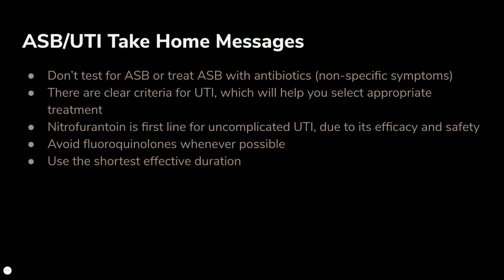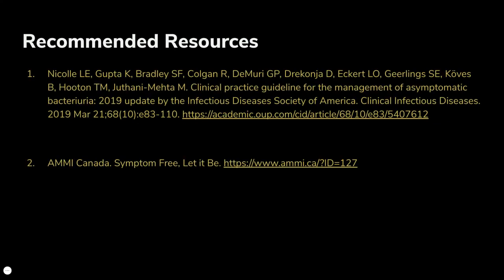Take-home messages: Don't test for or treat asymptomatic bacteriuria with antibiotics in older patients. There are clear criteria for urinary tract infection, including the Loeb criteria, which will help you select appropriate treatment. Nitrofurantoin is first-line therapy for uncomplicated UTI due to its efficacy and safety. Avoid fluoroquinolones whenever possible due to risks of resistance and several black box warnings. When it comes to duration of therapy, shorter is smarter — use the shortest effective duration whenever possible. For additional information on asymptomatic bacteriuria or UTI, a couple of recommended resources are provided. Thanks very much and we'll talk in the next lecture.